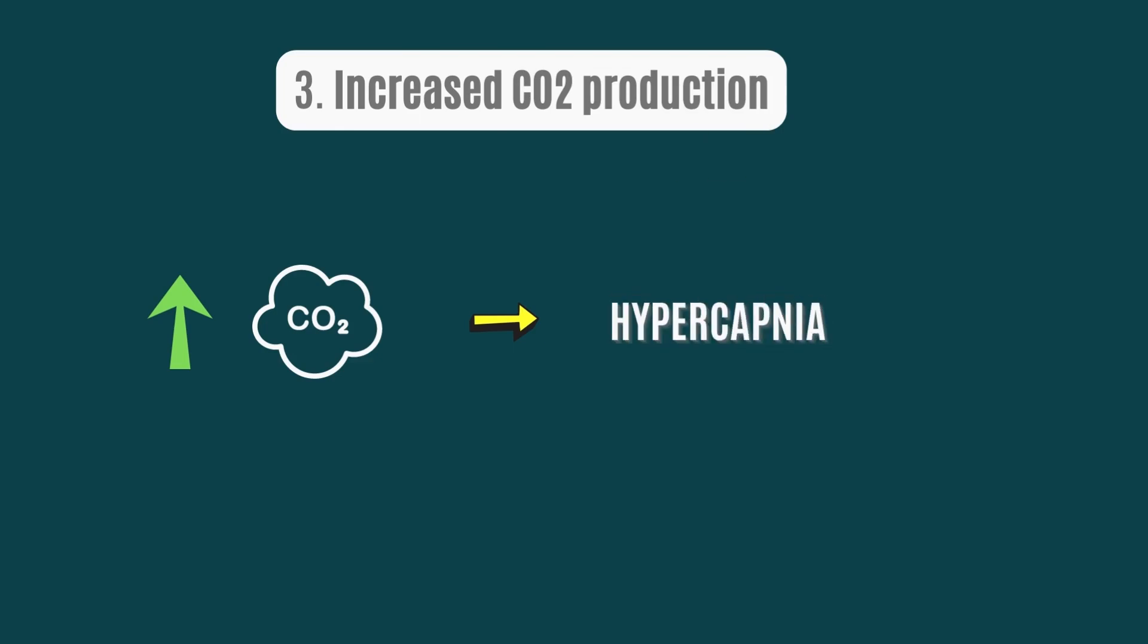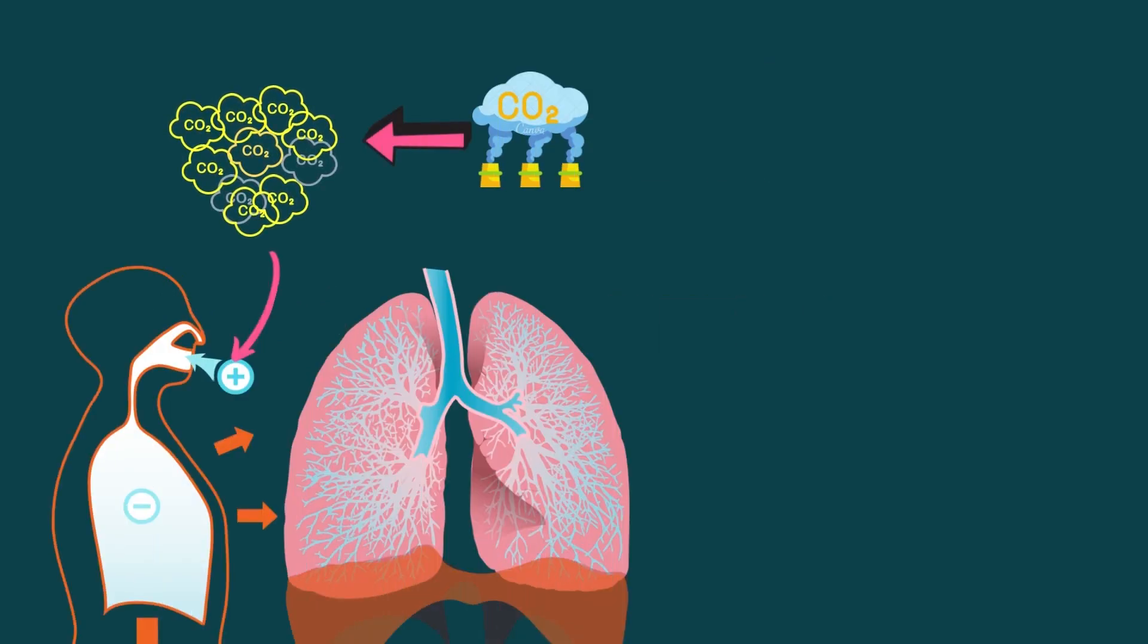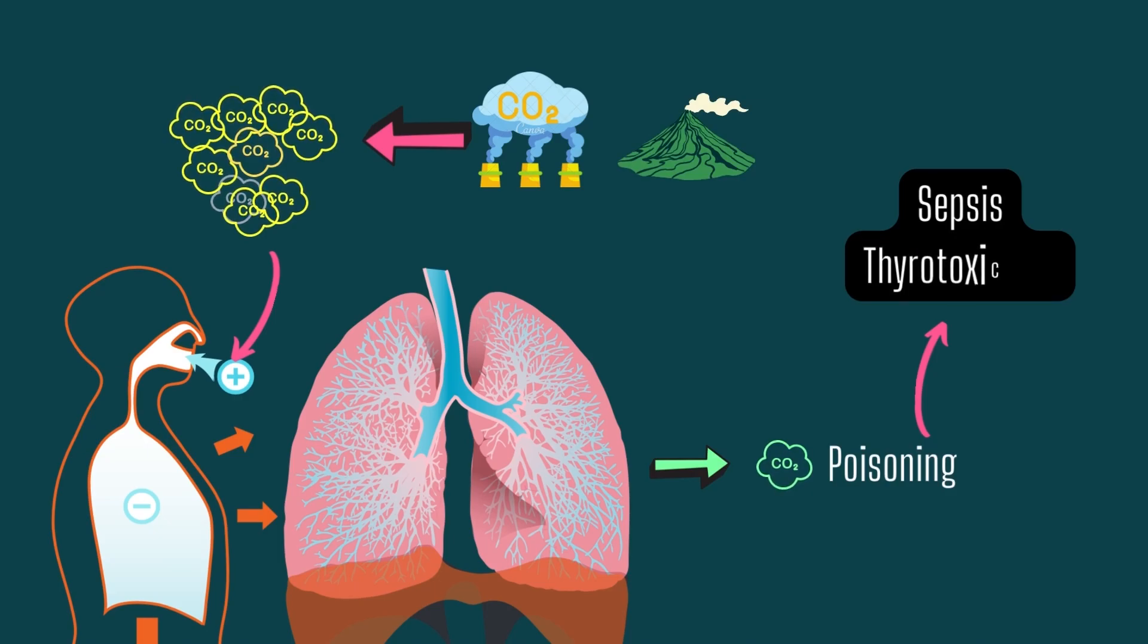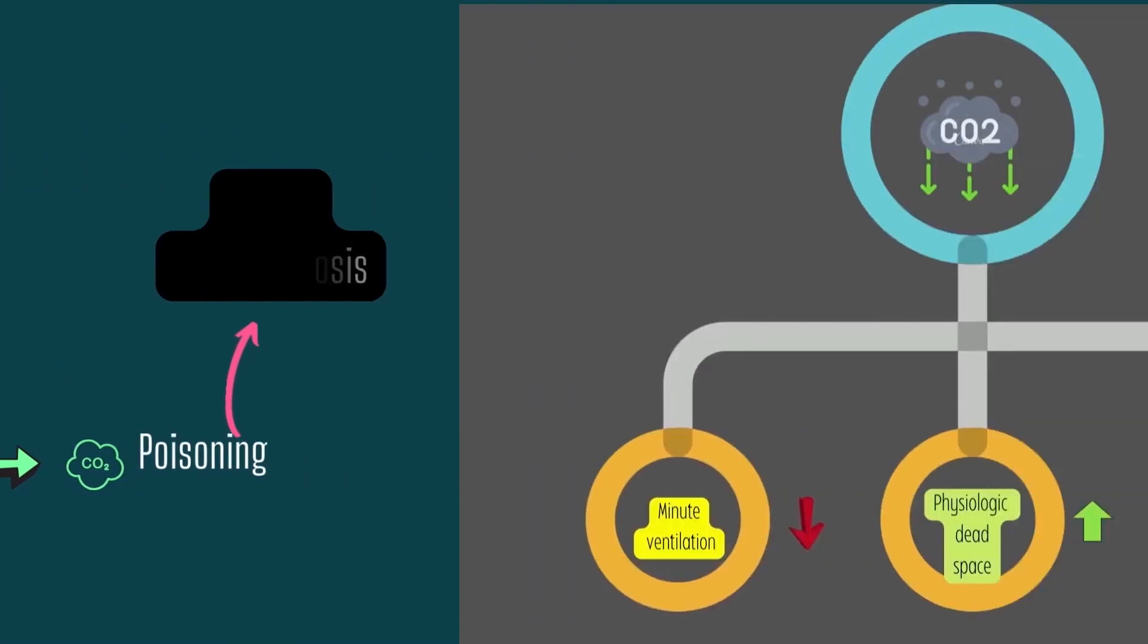Third cause of hypercapnia is anything that increases CO2 production. This group is more likely to contribute only partially to hypercapnia and is not usually the primary cause, but it can occur in conditions that increase metabolic rates. Environmental exposure to areas rich in carbon dioxide, such as volcanoes or geothermal activity, puts patients at risk for carbon dioxide poisoning. It can lead to sepsis, thyrotoxicosis or fever.